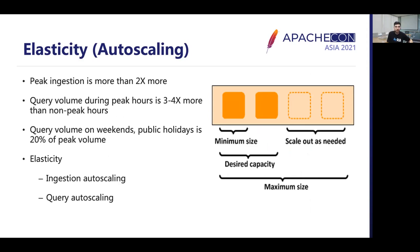We also noticed that peak ingestion and query volumes were significantly higher than non-peak hours — up to three times on usual days. Query volume on weekends and public holidays was only 20% of peak volume. Provisioning a constant-size cluster for peak volumes was a huge waste of resources. So we built elasticity into our cloud service. This consists of two areas: ingestion autoscaling, where as data to be ingested increases we automatically provision more ingestion nodes; and query autoscaling, where as query load and backlog increases we provision more compute dynamically, and scale it back down as it returns to normal. All this is done with Kubernetes-based autoscaling policies constantly monitoring ingestion and query performance from our metrics cluster.